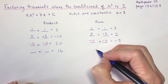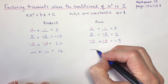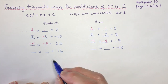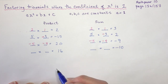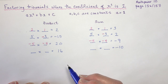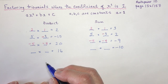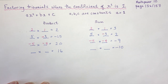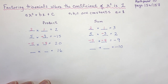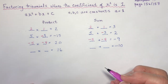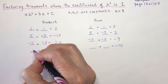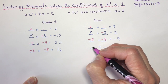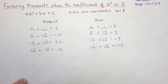What multiplies to 16 and adds to negative 10? They both have to be negative to give a positive product, but because the sum is negative, both must be negative. So negative 2 and negative 8 — they multiply to 16 and add to negative 10.